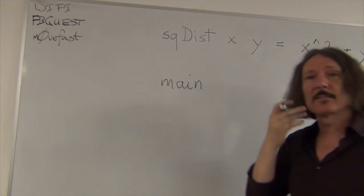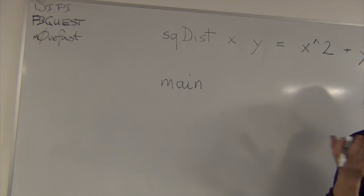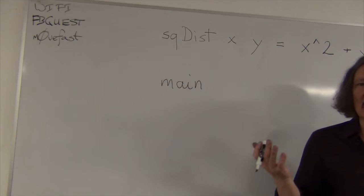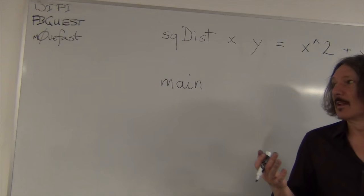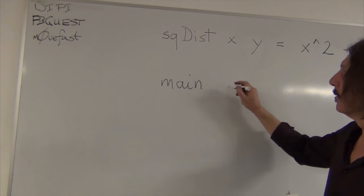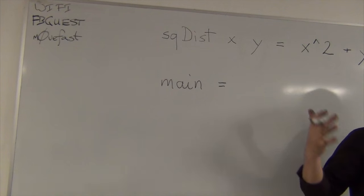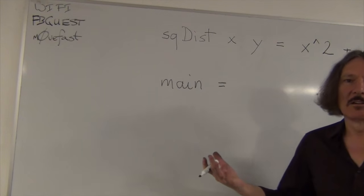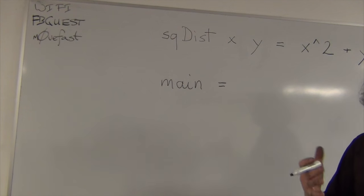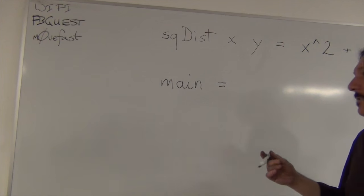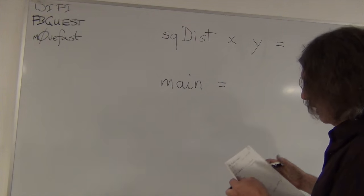And main is also a definition of a function, sort of, because main does not take arguments. Okay? So, it's really main equals. So, main is not really a function in the sense that it doesn't take argument, but it is an expression. So, it's... Or you can think of it as a nullary function, a function that takes no arguments. And it's fine.